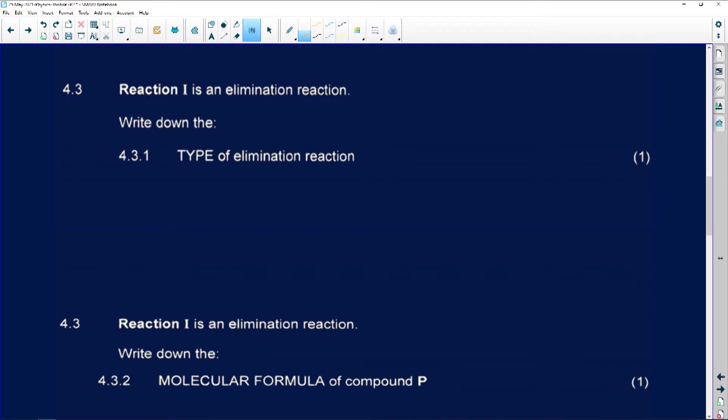Number 4.3, reaction 1 is an elimination reaction. Elimination reaction means something was taken out. And if something is eliminated, we take away, we move from single chains all the way to double chains, to double bonds or triple bonds. Now it says we must write down the type. There's various types of elimination reactions. And what was the type of elimination reaction in reaction number 1? This was cracking.